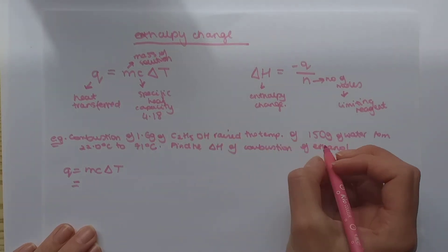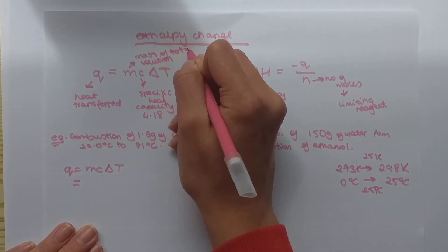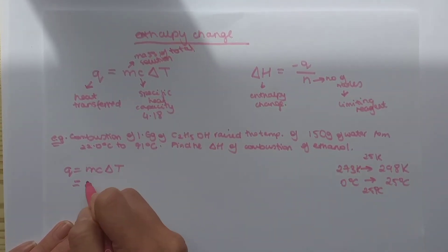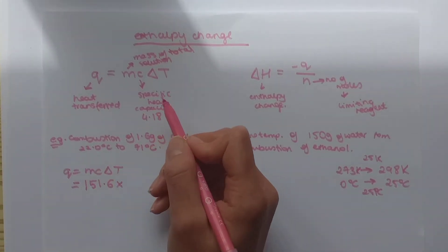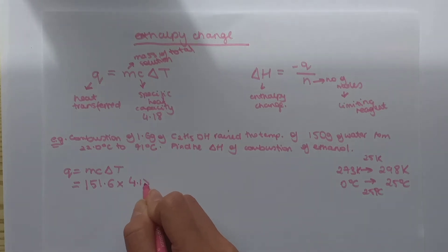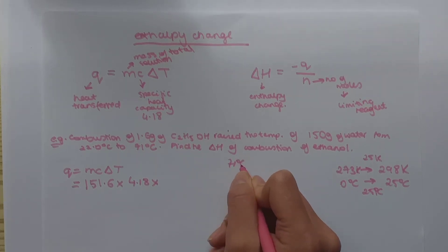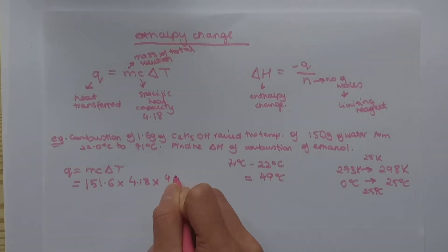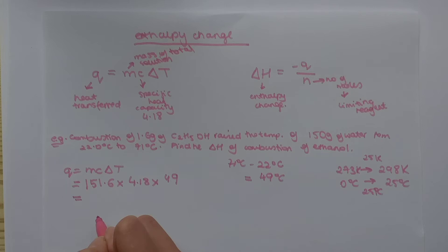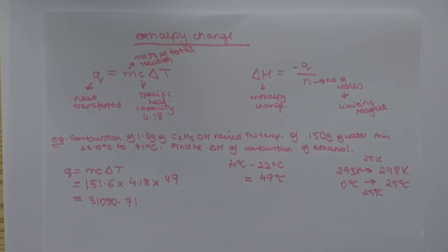Why do I not only use 150 or 1.6 grams? Because we have to find the mass of total. So, it's going to be 151.6. We multiply it by our C, which is the specific heat capacity, always 4.18, and then multiply it by your change in temperature, 71 degrees Celsius minus 22 degrees Celsius, which gives you 49 degrees Celsius. You put all of this into your calculator to get 31050.71 as your heat transferred.